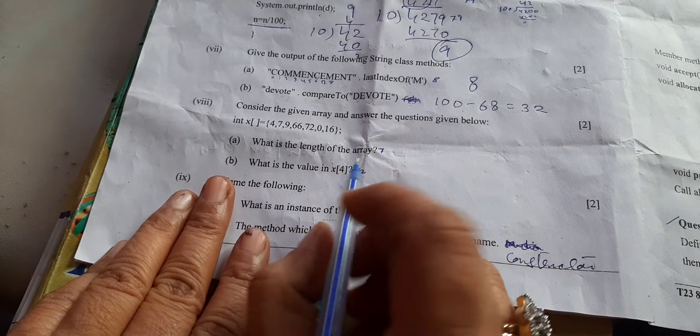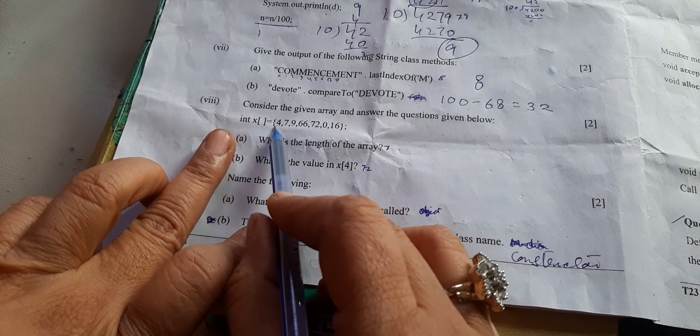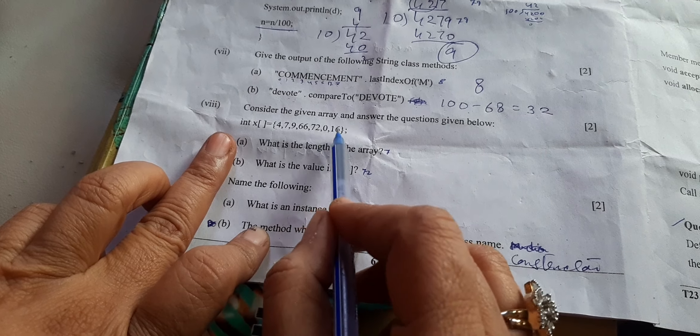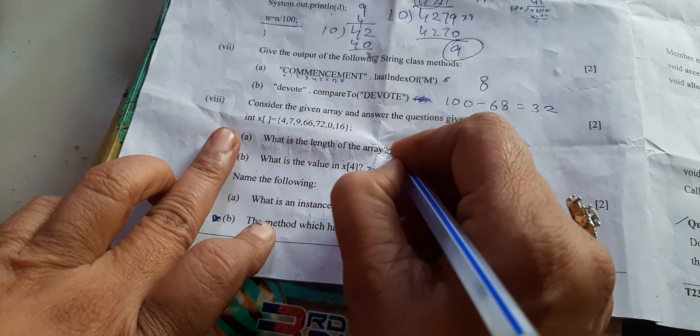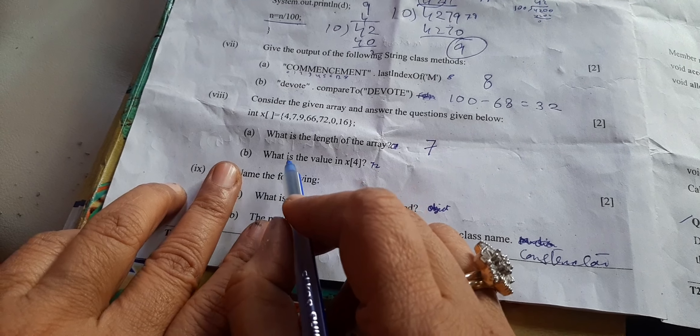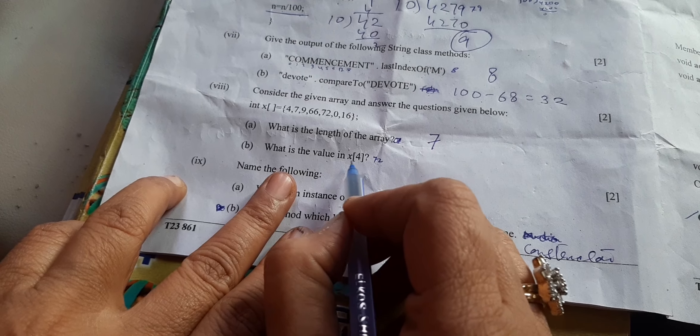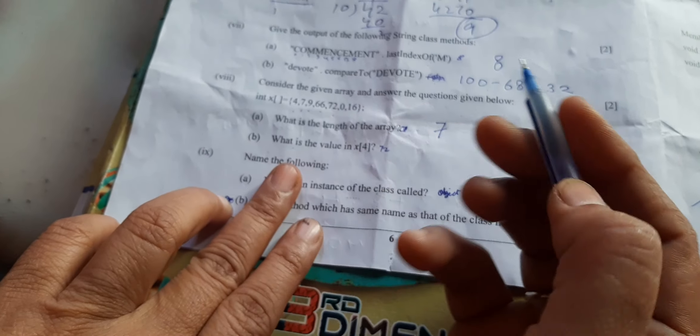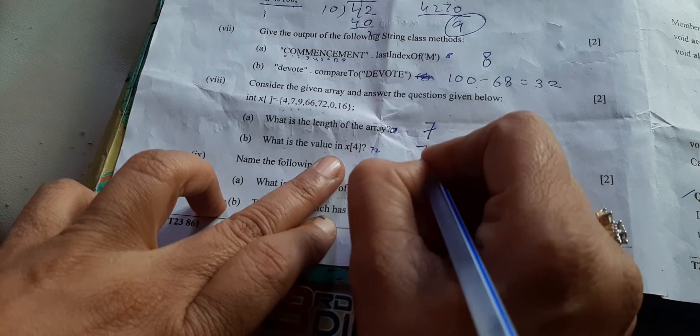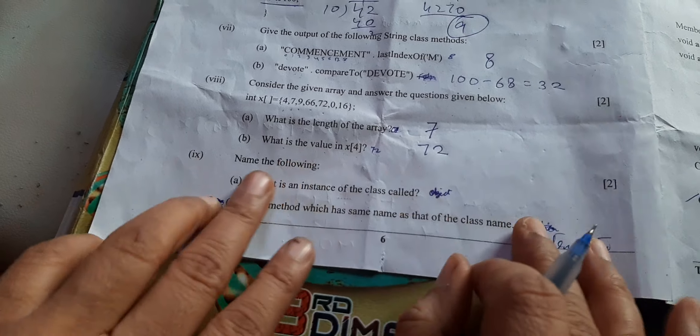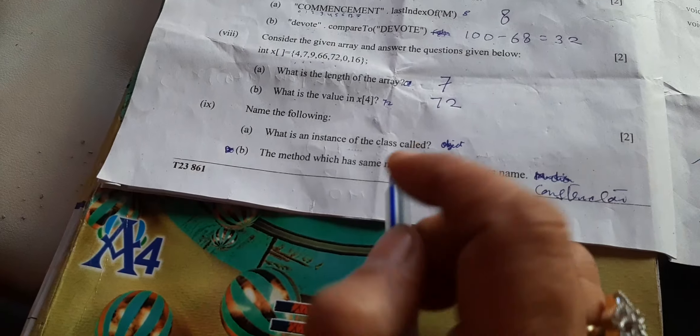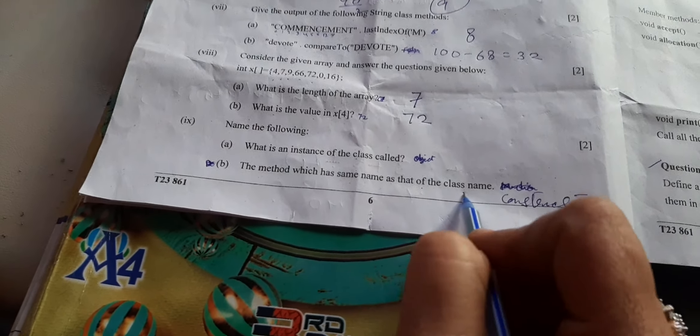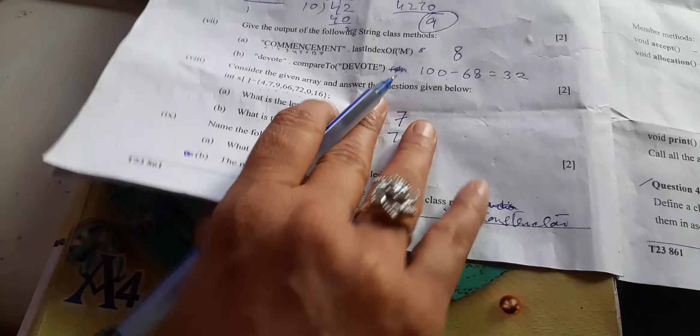Consider the array. What is the length of the array? One, two, three, four, five, six, seven - so seven is the correct answer. What is the value at x of 4? Zero, one, two, three, four - fourth index is 72. Name the following: the instance of a class is called object. The method which has same name as that of the class is a constructor.